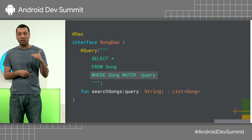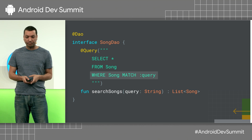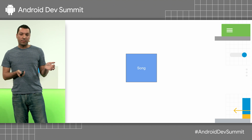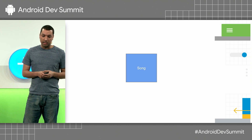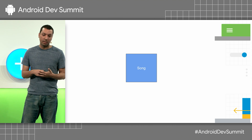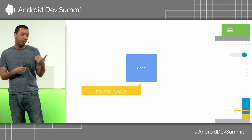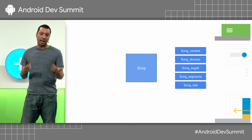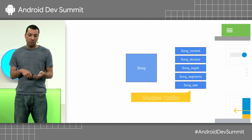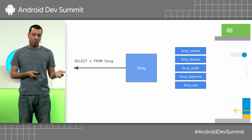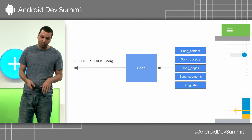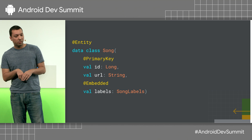You might think you can use FTS on all tables that have any string, but not quite. Using FTS consumes more disk space because when you create an FTS table, you actually create a virtual table backed by a few shadow tables — one where your content is stored and others containing indexing information. When you query from the virtual table, the information actually comes from these shadow tables.